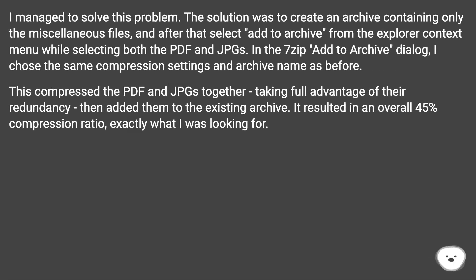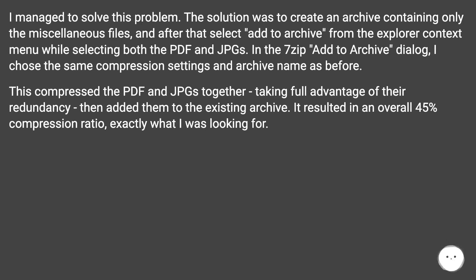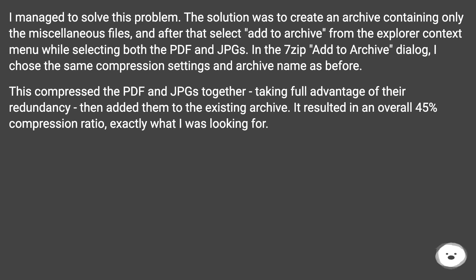I managed to solve this problem. The solution was to create an archive containing only the miscellaneous files, and after that select 'Add to Archive' from the Explorer context menu while selecting both the PDF and JPGs. In the 7-zip Add to Archive dialog, I chose the same compression settings and archive name as before. This compressed the PDF and JPGs together, taking full advantage of their redundancy, then added them to the existing archive. It resulted in an overall 45% compression ratio, exactly what I was looking for.